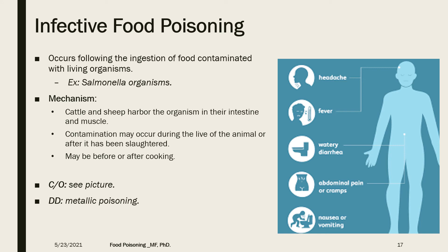Infective food poisoning occurs due to ingestion of food contaminated with living organisms such as Salmonella. A common mechanism is that sheep and cattle harbor the organism in their intestines and muscle. Handling meat or animal products may lead to transfer of the organism into the human body, and contamination can happen before or after cooking due to food handling. Manifestations include headache, fever, watery diarrhea — sometimes progressing to dehydration — severe abdominal pain and cramping, and vomiting.